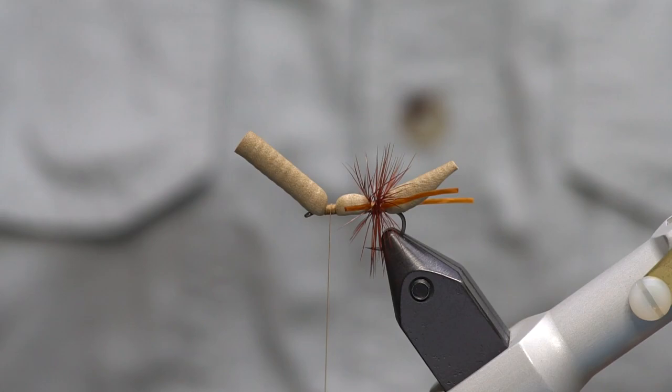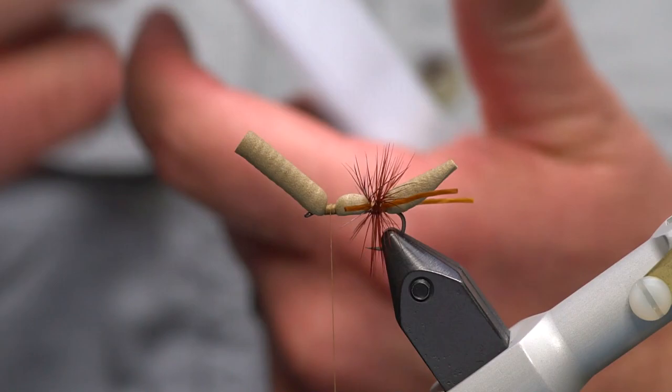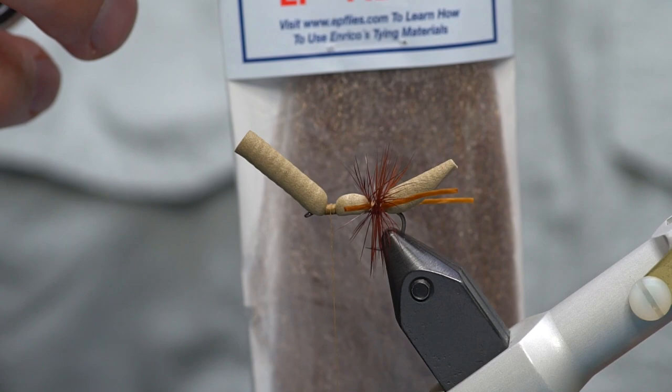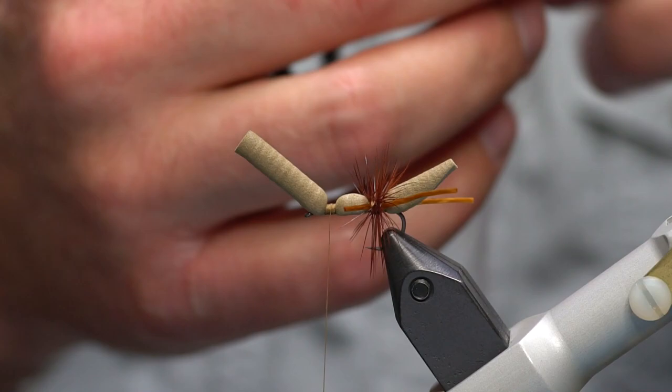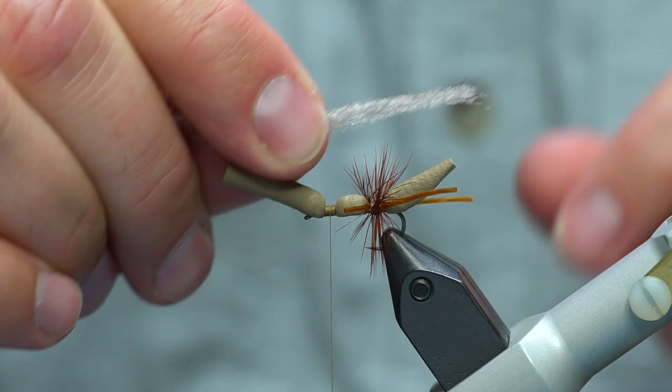Next up we're going to add the wing, which is EP trigger point. This particular color is western caddis gray. It's a really neat kind of blended color. Let's see if we can get it in focus, there we go. It looks a little darker on the camera, it's actually got a little bit more gray and white mix into it. It's really quite easy to see.